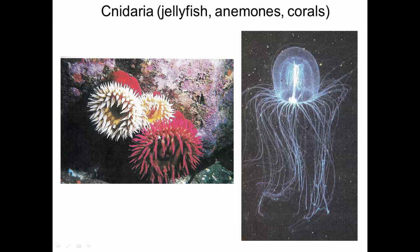Those nematocysts are used for stinging prey, capturing prey, and then consuming prey. Corals are in fact very small cnidarians that live within the rock, and a large number of them living next to each other makes up a coral reef. So there's a wide range of different morphologies within the phylum cnidaria — they all have nematocysts, but they go from free-living predatory organisms to very small organisms that build reefs.